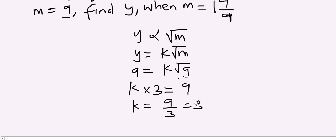So the relationship between y and m can be written as y equals 3 root m, since k is equal to 3. So having done that, we are told to find y when m is equal to 1 and 7 over 9. But this is the relationship.